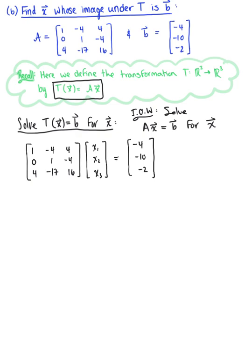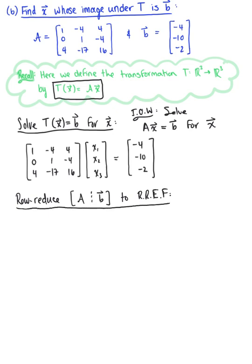This is our matrix equation — a non-homogeneous equation. To solve this we'll use row reduction, reducing the augmented matrix [A | b] to row reduced echelon form, which will give us vector x as long as the system is consistent. So we set up the augmented matrix: 1, 0, 4 | −4; then 1, −17 | −10; and 4, −4, 16 | −2.